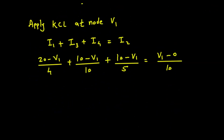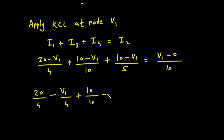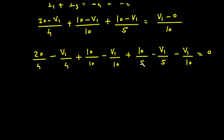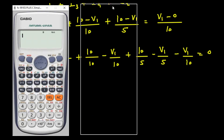Simplifying: we expand each term to get 20/4 − V1/4 + 10/10 − V1/10 + 10/5 − V1/5 = V1/10. Moving V1/10 to the left side gives minus V1/10, and the whole expression equals zero.